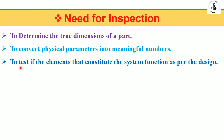The third need for inspection is to test whether the elements constituting the system function as per the design. The designer makes the design and the production engineer makes the product through different manufacturing processes, but at the final stage you need to measure whether the finished product conforms to the design. That is the basic need for inspection — to verify that whatever was decided is physically achieved.